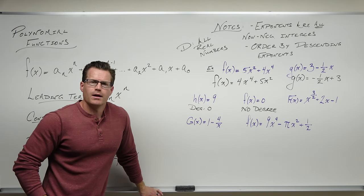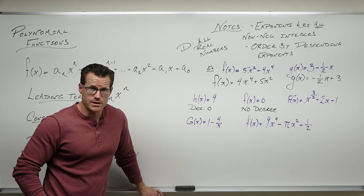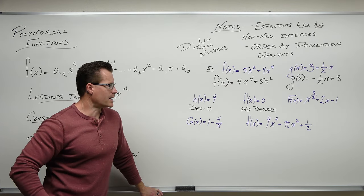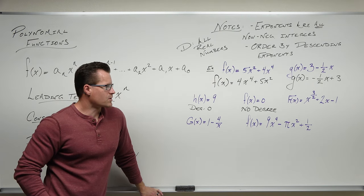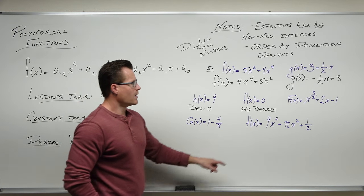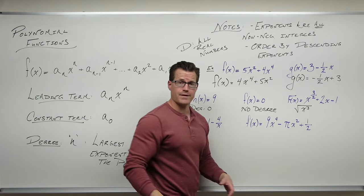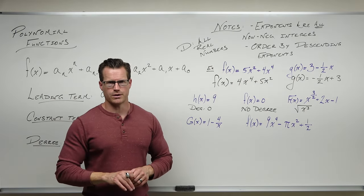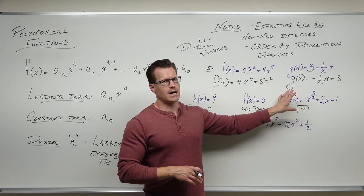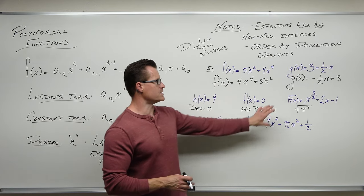Does it super matter? Not really. The big things here are: put it in order, make sure you know what a leading term is, make sure you can find the degree, and understand what the constant term is and that it's at the end. How about f(x) = x^(3/2)? As soon as you see a fractional exponent, that is a square root of x to the third power — that's a radical. There are no radicals in polynomials, so we'd say this is not a polynomial function.